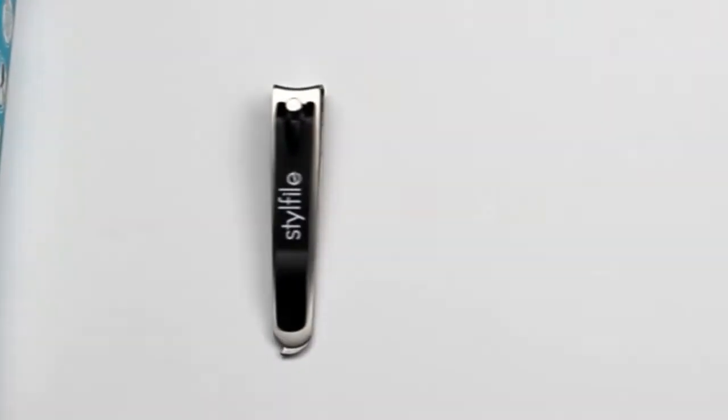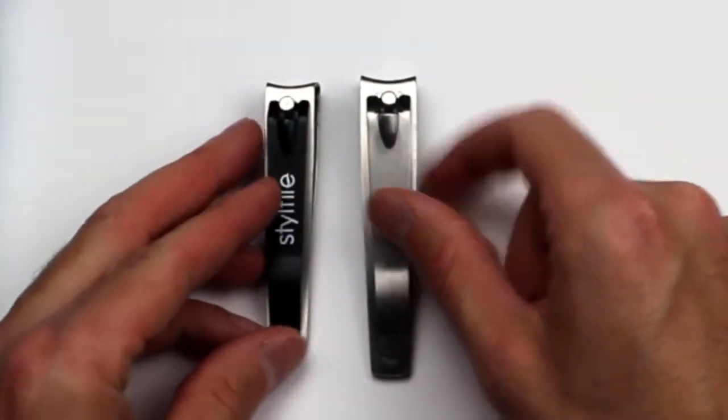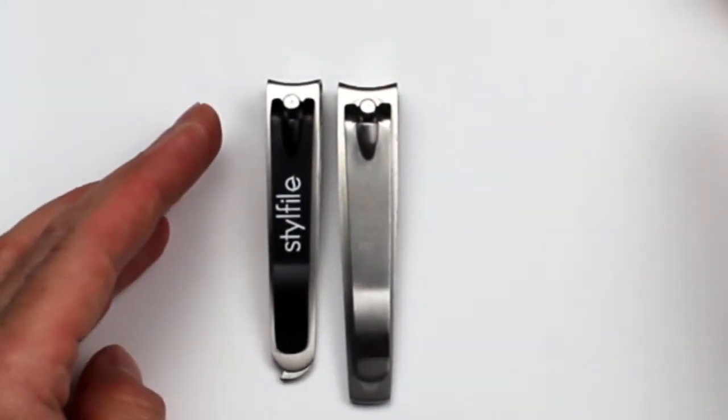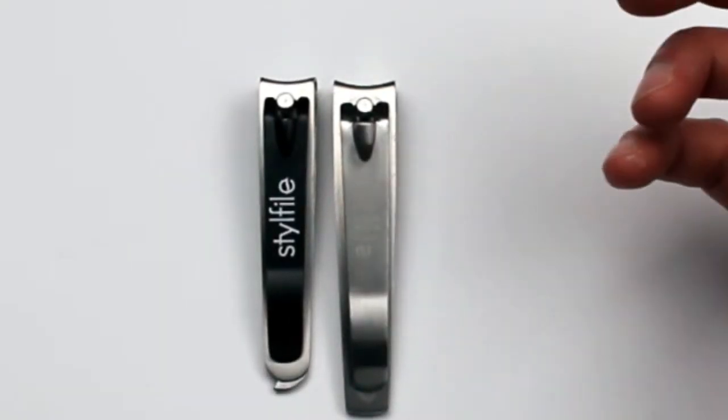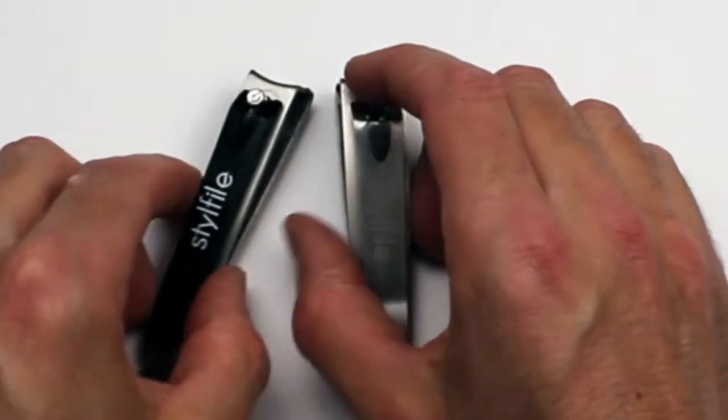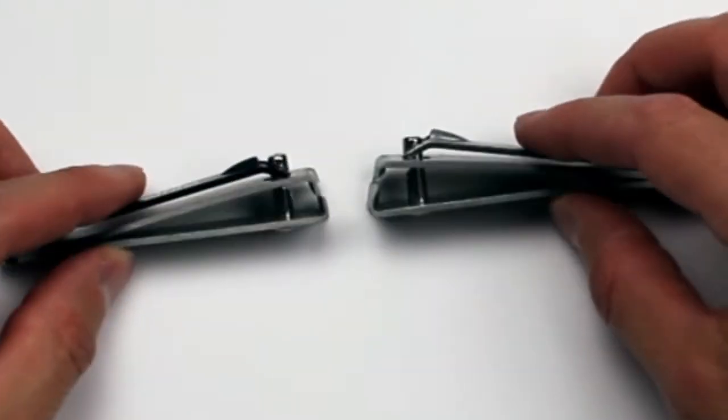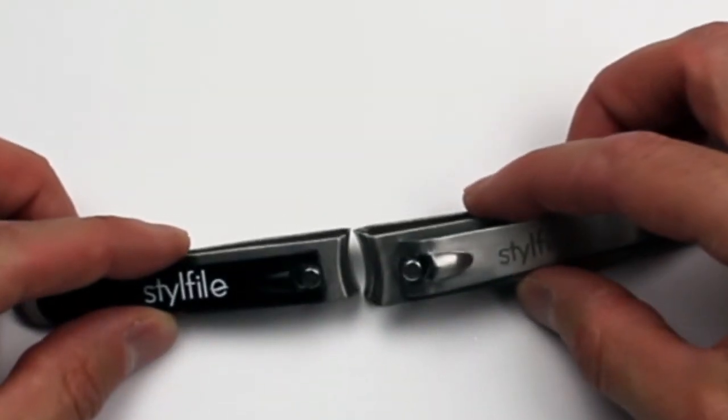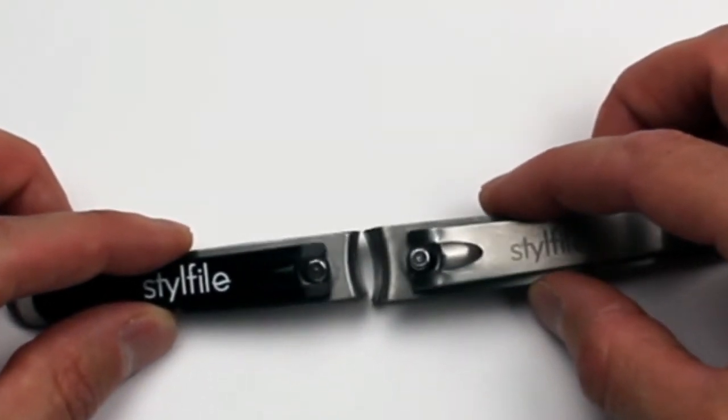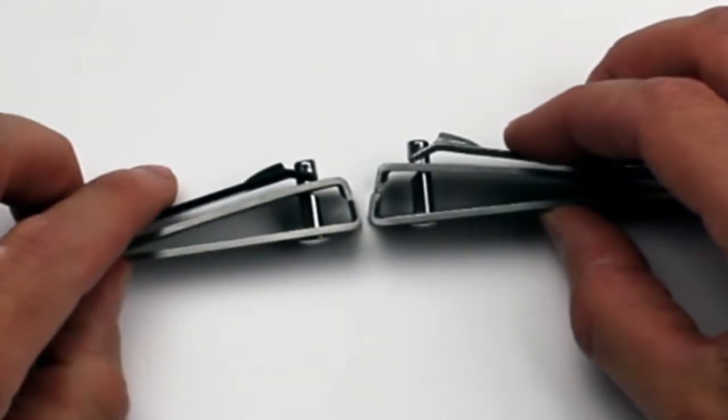If you have the original Stylfile Clipper you'll notice it's quite a bit smaller. We've made it a little bit shorter and a tiny bit lighter, and that makes it suitable for both fingernails and toenails. It's a tiny bit narrower too so you can get into the sides.